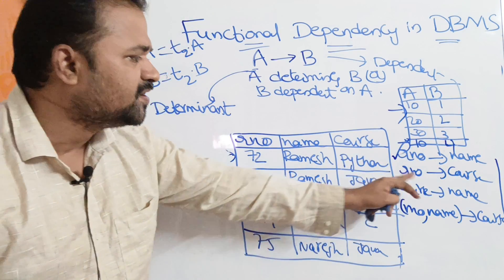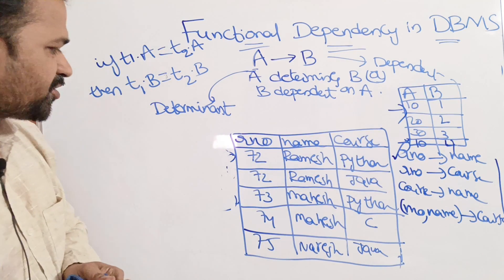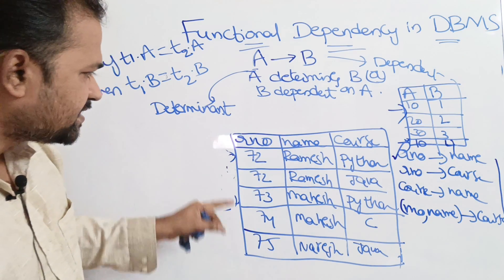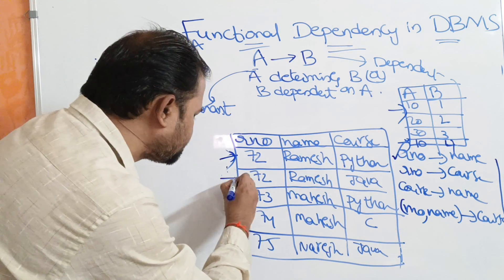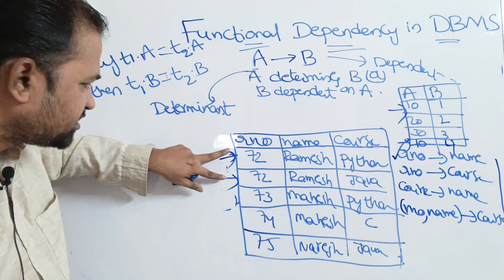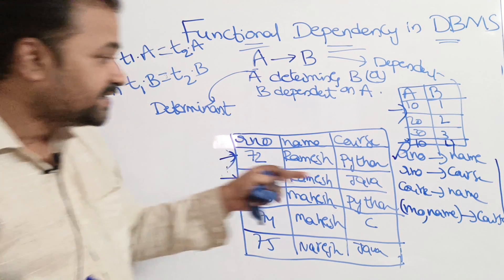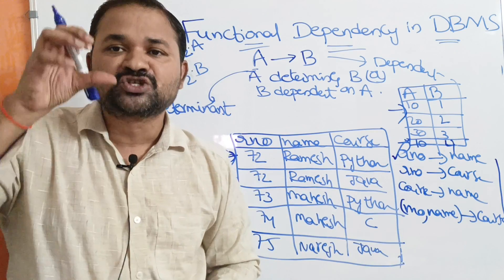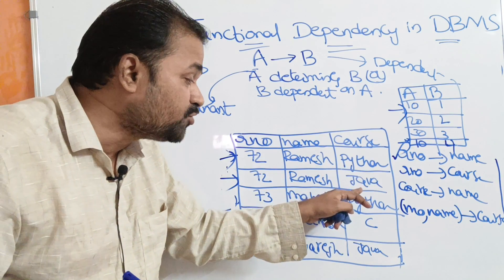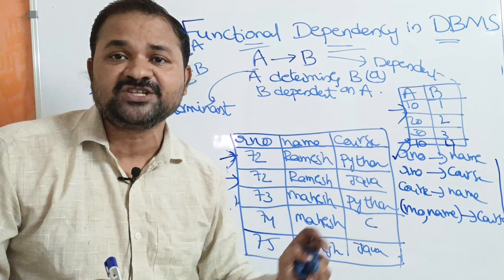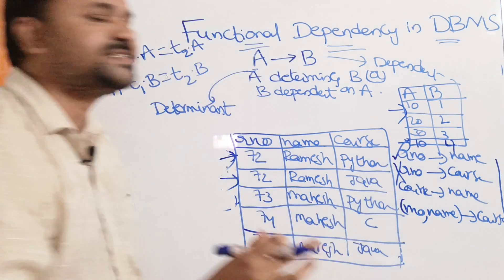The second functional dependency is: roll number determines course. Focusing on the two tuples where T1.roll_number = 72 and T2.roll_number = 72, T1.course should equal T2.course. But T1.course is Python and T2.course is Java — they are not equal. So this functional dependency is wrong.